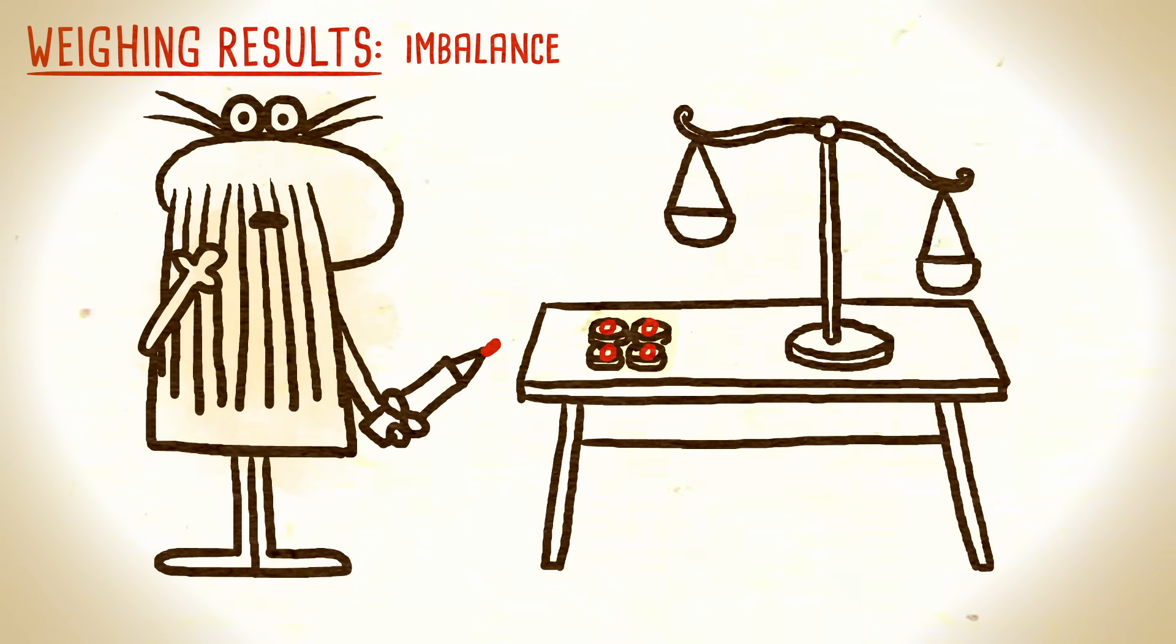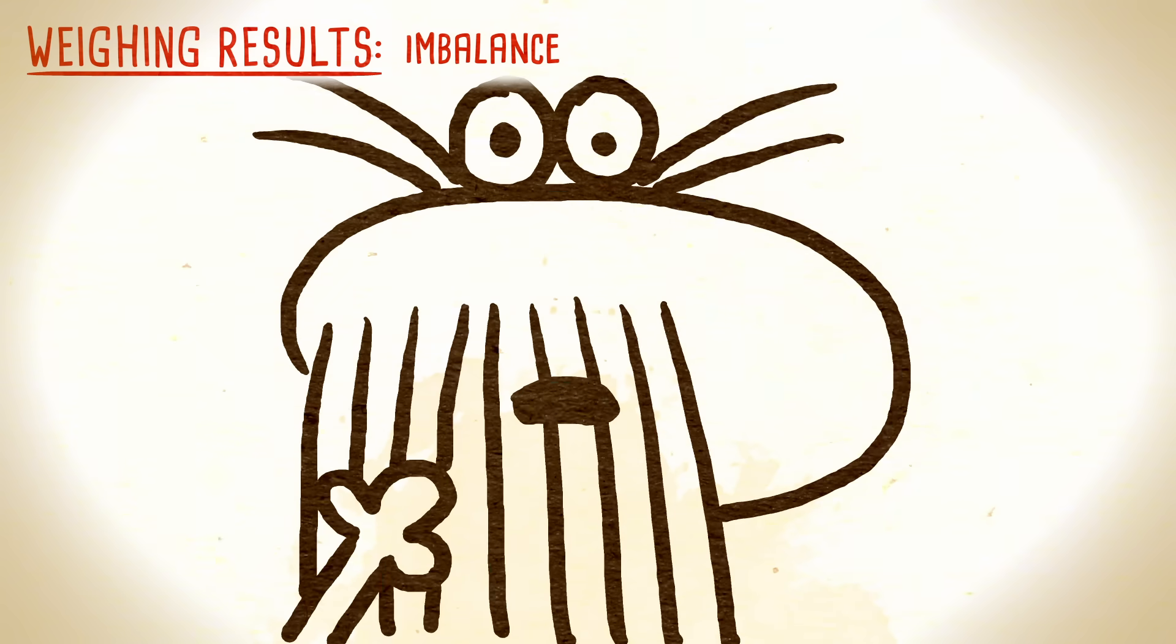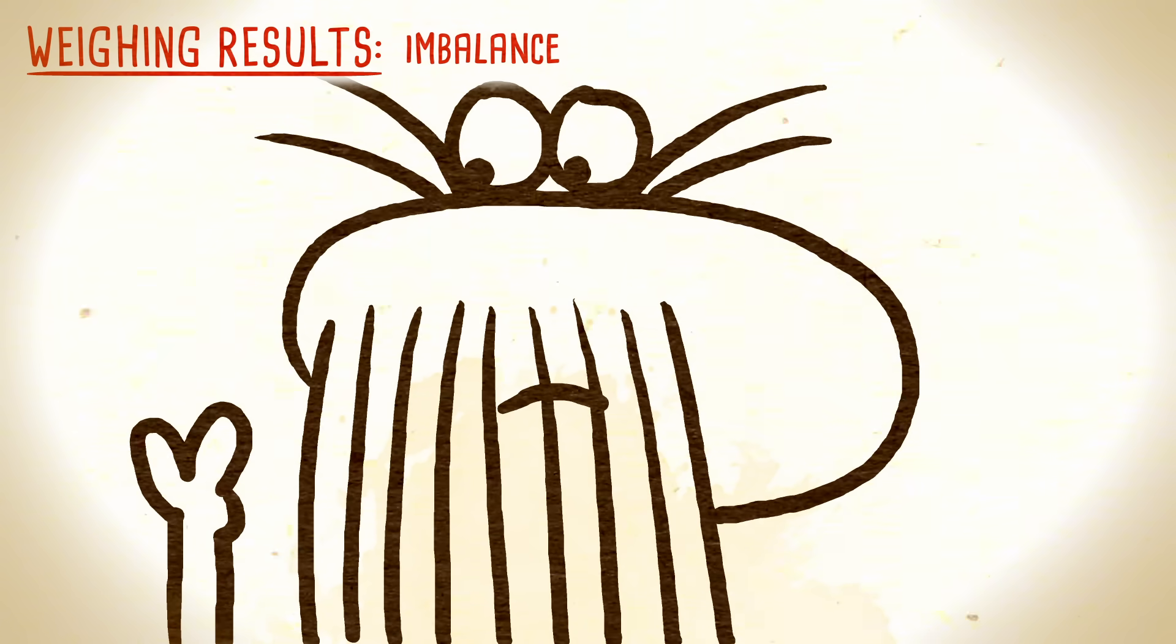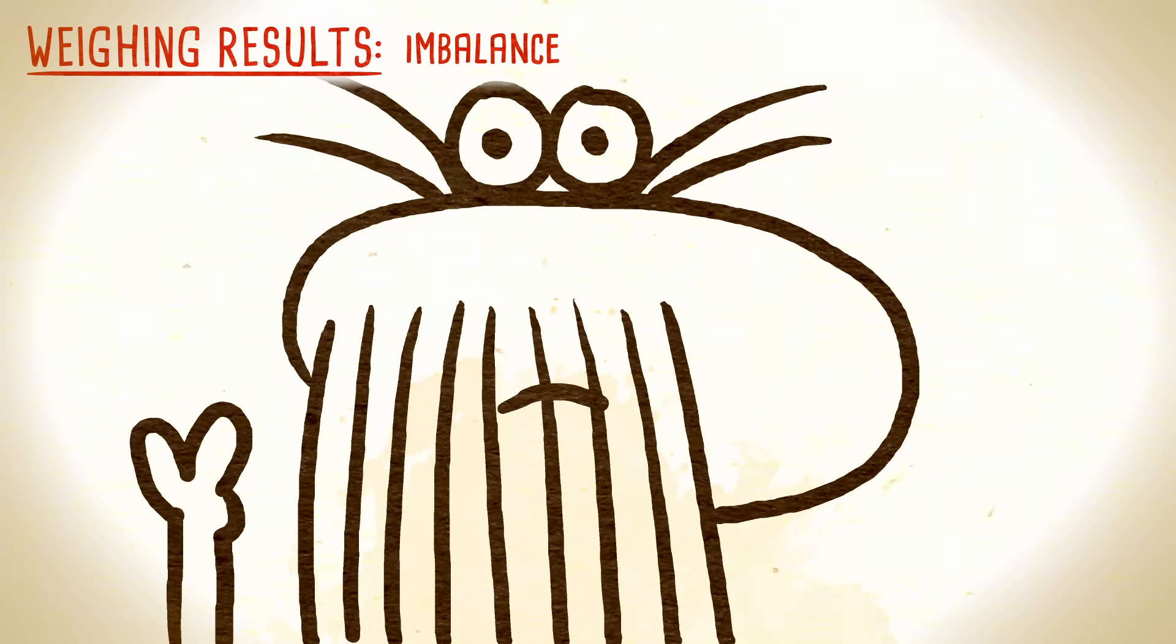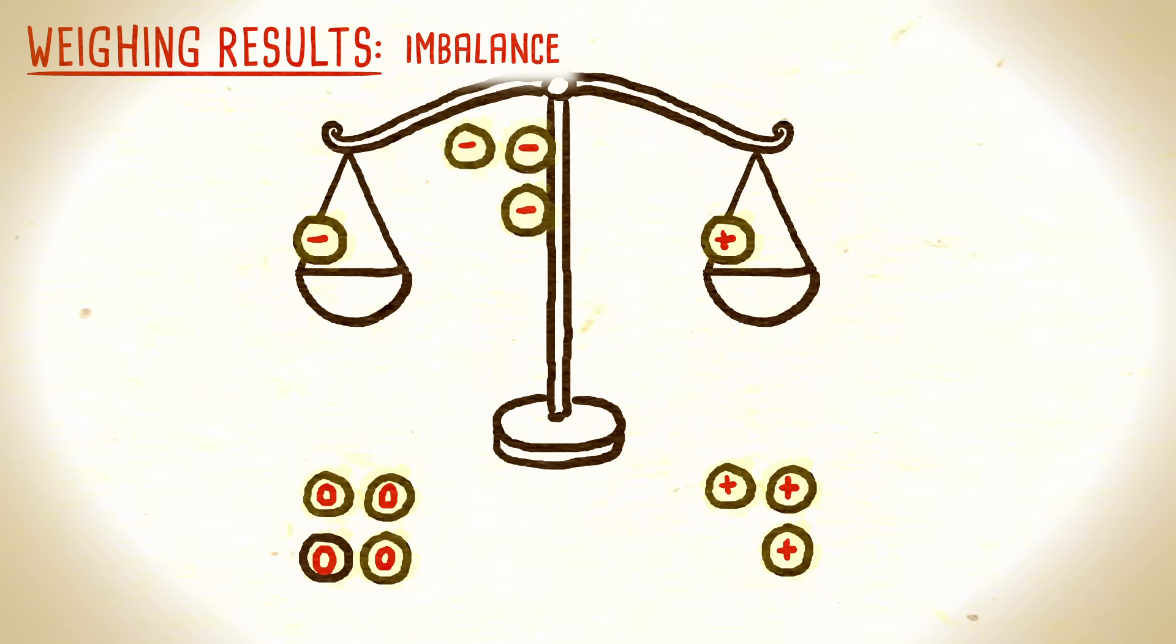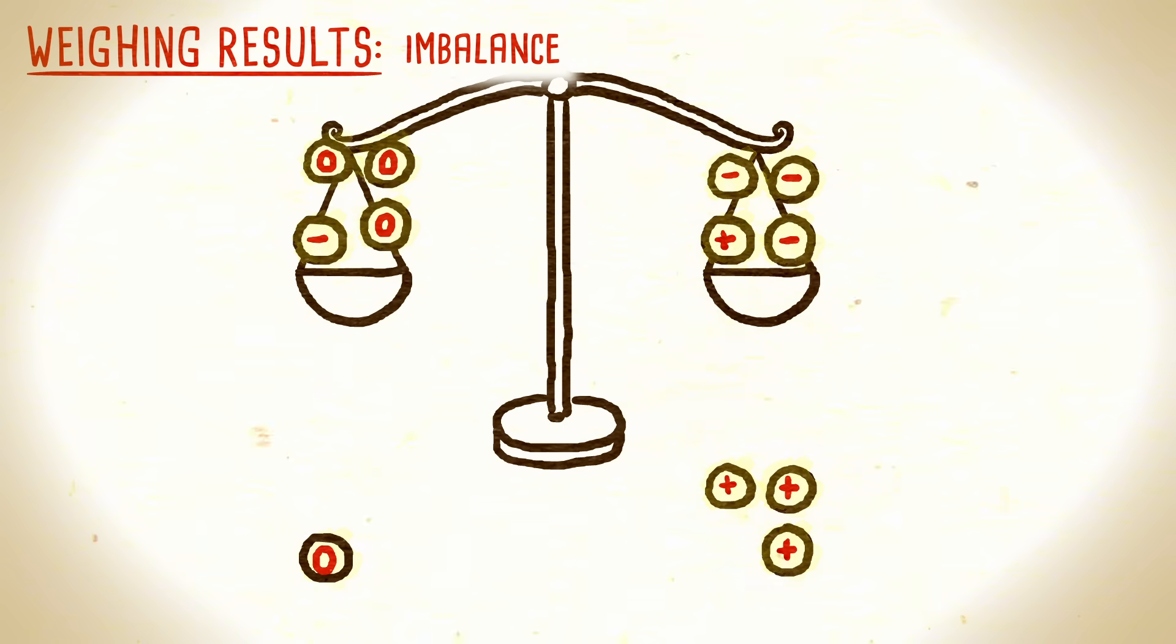Now you'll need to think strategically, remove all remaining ambiguity in just two more weighings. To do this, you'll need to reassemble the piles. One method is to replace three of the plus coins with three of the minus coins, and replace those with three of the zero coins.